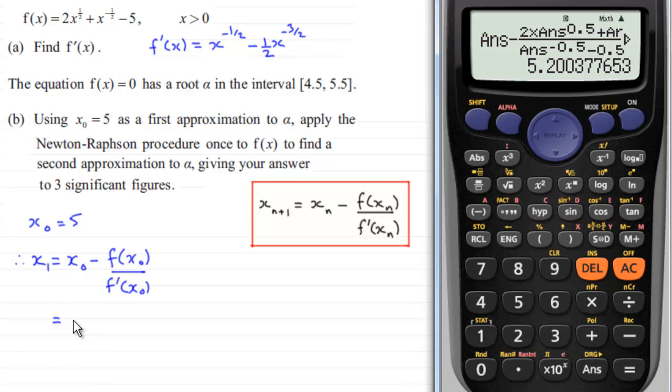So what we've got here then is 5.2003 and so on, and we've got to give our answer to three significant figures, and to three significant figures this is 5.20 to 3SF. Okay, so that's our approximation to alpha.